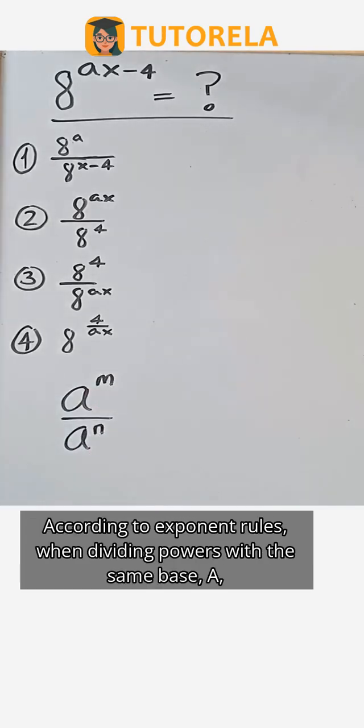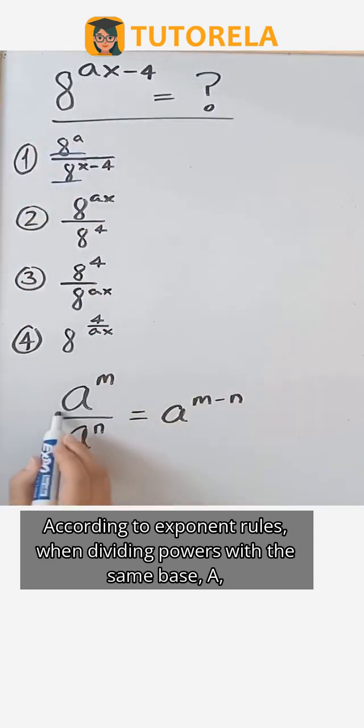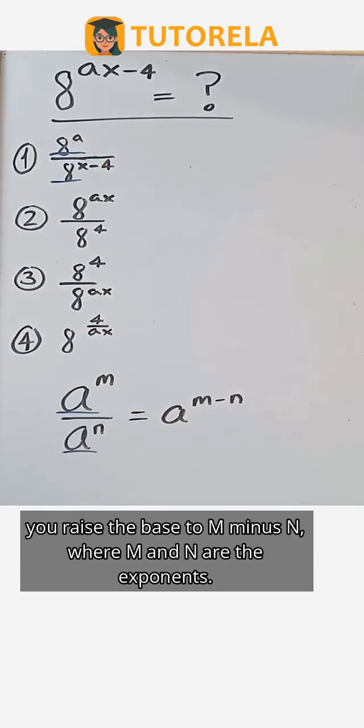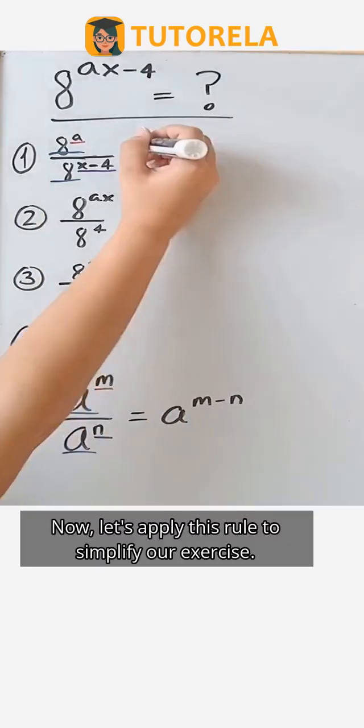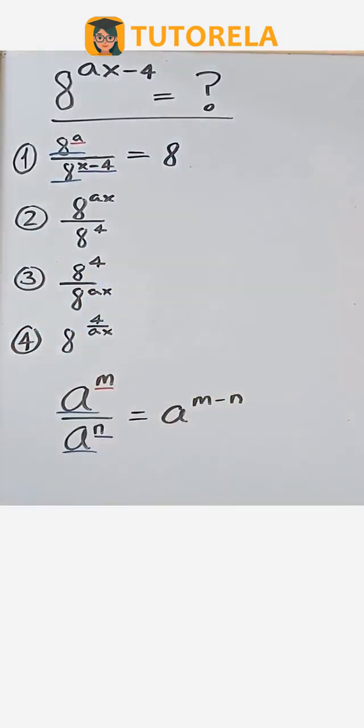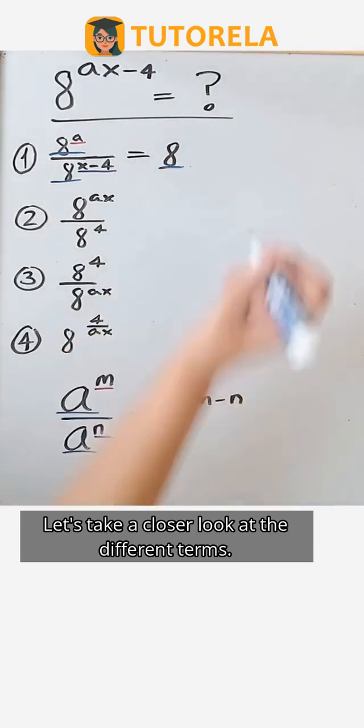According to exponent rules, when dividing powers with the same base a, you raise the base to m minus n, where m and n are the exponents. Now, let's apply this rule to simplify our exercise. Let's take a closer look at the different terms.